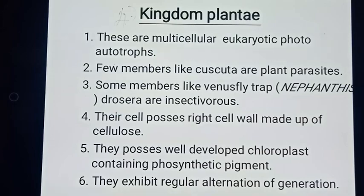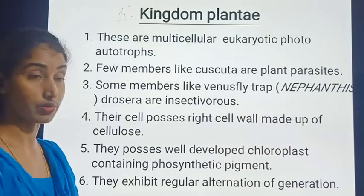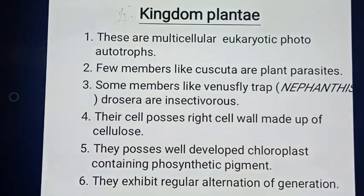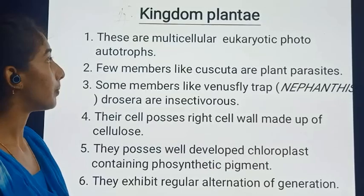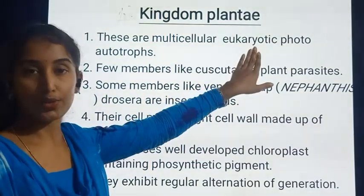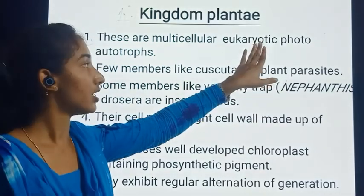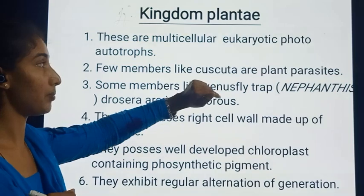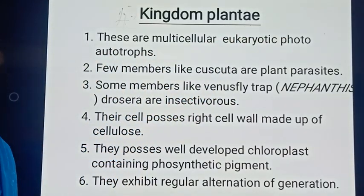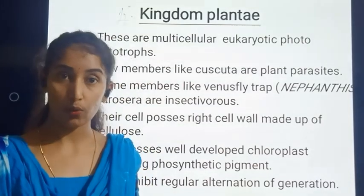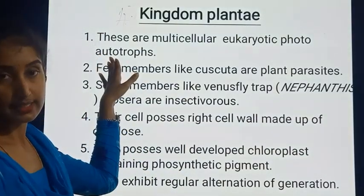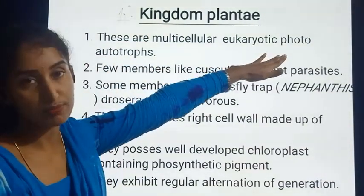The first characteristic is that plants are multicellular organisms and eukaryotic. Importantly, they are photoautotrophs — they synthesize or manufacture their own food. Multicellular means they have many cells and well-developed tissues for various functions. Eukaryotic means the nucleus is definite and genetic material is enclosed by a nuclear membrane. Photoautotrophs means they use sunlight to manufacture their food.